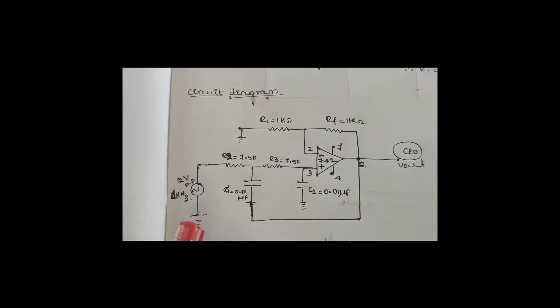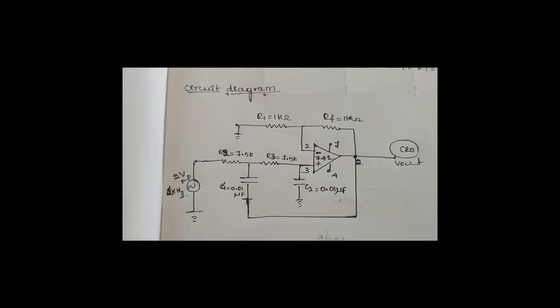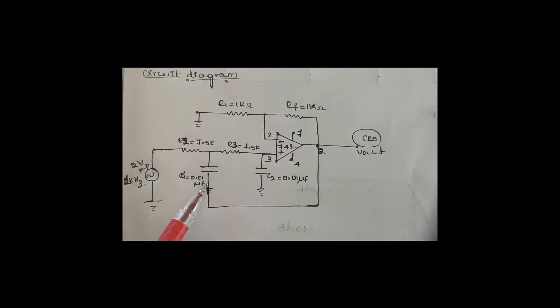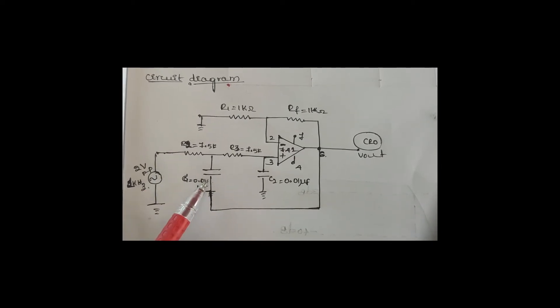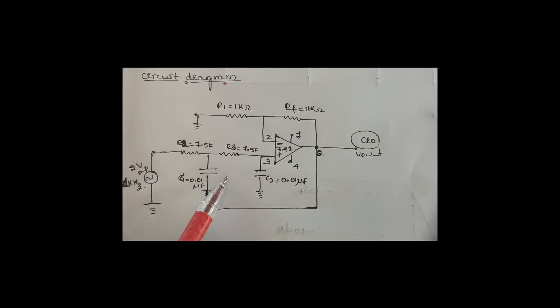The cutoff frequency expression is F equals 1 divided by 2π times the square root of R2·R3·C2·C3. In the circuit diagram of the active low-pass filter, there are two RC networks making it a second-order filter. One RC network would make it a first-order filter, and this RC network forms a passive low-pass filter.